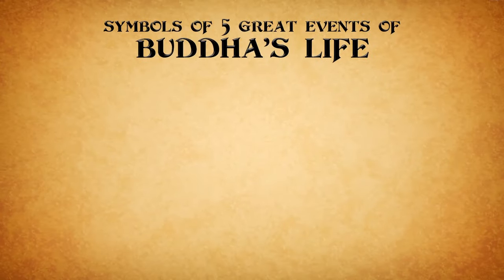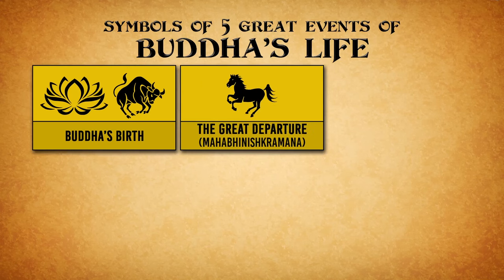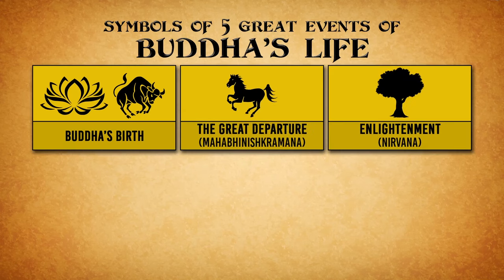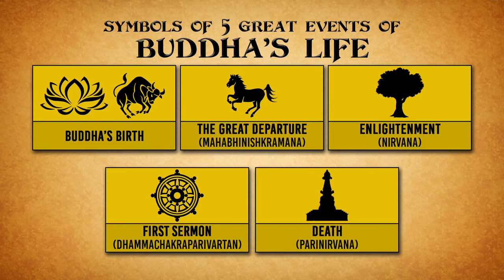Symbols of five great events of Buddha's life are: 1. Buddha's birth — Lotus and Bull. 2. The great departure — Horse. 3. Enlightenment — Bodhi tree. 4. First Sermon — Wheel. 5. Death — Stupa.